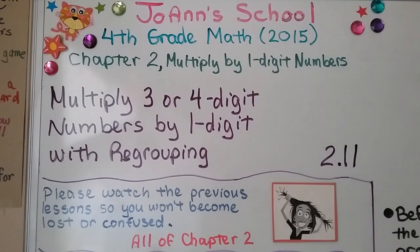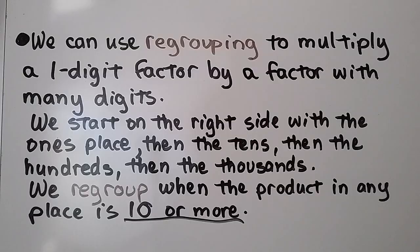Lesson 2.11: Multiply 3 or 4 digit numbers by 1 digit with regrouping. We can use regrouping to multiply a 1-digit factor by a factor with many digits.